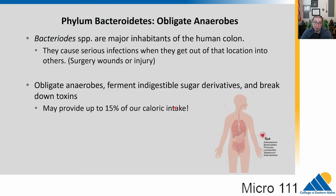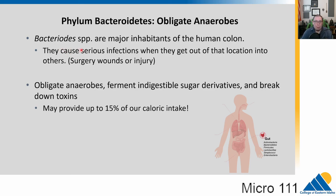The other phylum is the Bacteroidetes. This group is primarily obligate anaerobes — they must live in places without oxygen. They are a major component of our microbiome in the human colon. They can cause serious infections when displaced; for example, if something punctures your colon, these bacteria can get out and cause severe abscesses and infections. Normally though, they are non-pathogenic: they ferment indigestible sugars and derivatives, break down toxins, and we think they could provide up to 15% of our actual caloric intake by converting what we eat into forms we can use for energy.